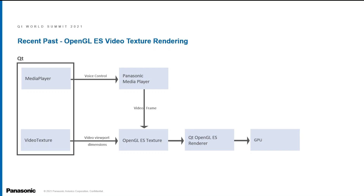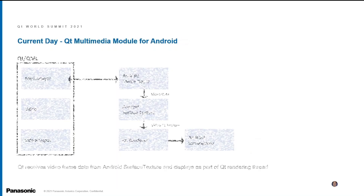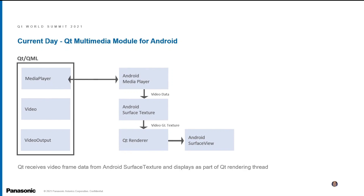Eventually we did switch to the Qt Multimedia module, which Tuan will cover next. On our newer systems, we started using the Qt Multimedia module to implement our video playback GUI about two years ago with Qt 5.12 on Android 7 and 8. In our experience, video playback and Qt widgets work seamlessly together.